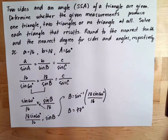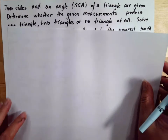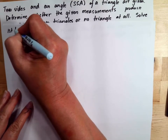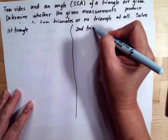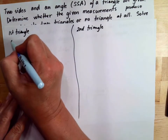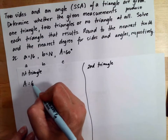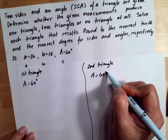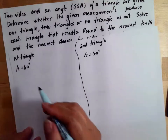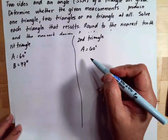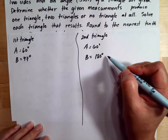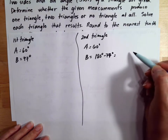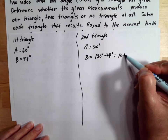We now check whether this produces one triangle or two triangles. Assuming a first and second triangle: for the first triangle, angle A is 60 degrees and angle B is 77 degrees. For the second triangle, angle B equals 180 degrees minus 77 degrees, which is 103 degrees.